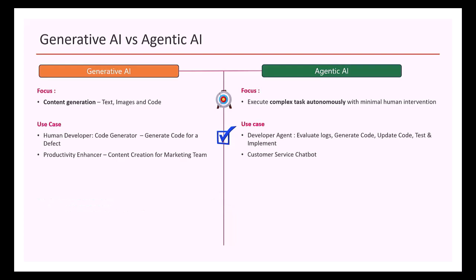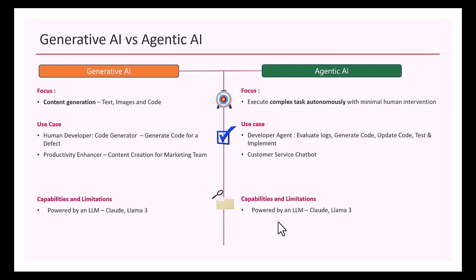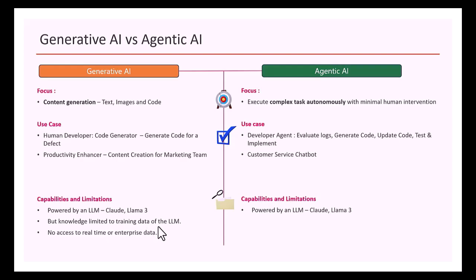The probably only similarity between generative AI and agentic AI is that both are powered by a large language model — such as Claude, LLaMA 3, OpenAI, or any other LLM. However, generative AI is limited to the training data of the LLM. It can only answer questions related to its training data and does not have access to real-time or enterprise data.